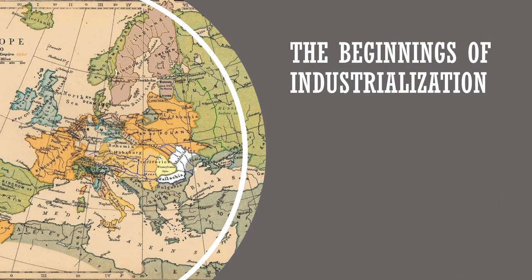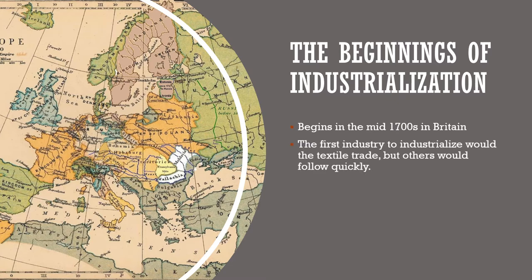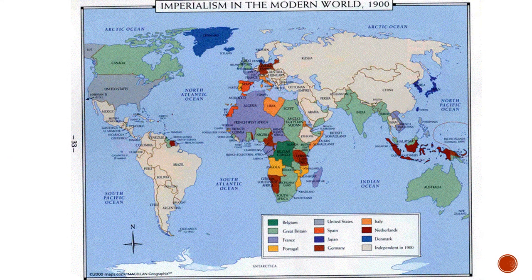We already know that the Industrial Revolution begins in Europe in the mid-1700s, specifically in Britain. The first industry to industrialize is the textile trade — the making of cloth — but other industries would follow quite quickly. And because Europe is the first part of the world to industrialize, this will have massive consequences to the overall balance of power. The Industrial Revolution would allow European countries to become imperial powers, ushering in over a century of cruelty and oppression with the age of imperialism.